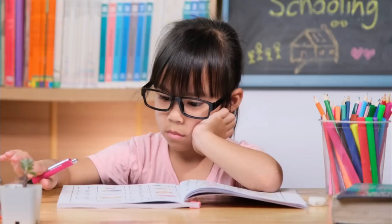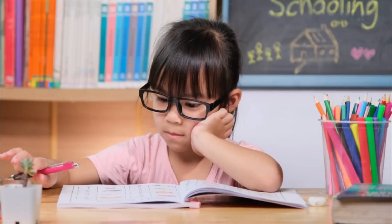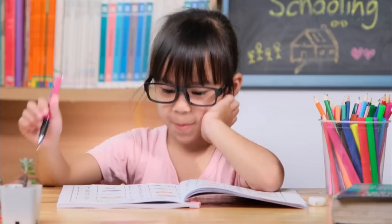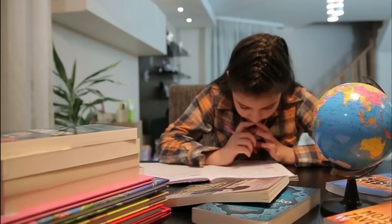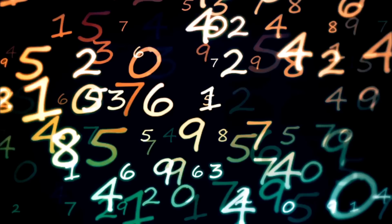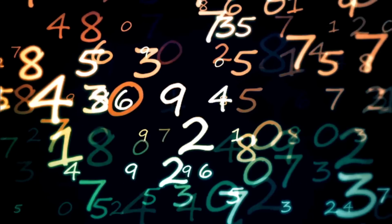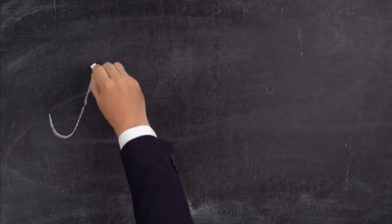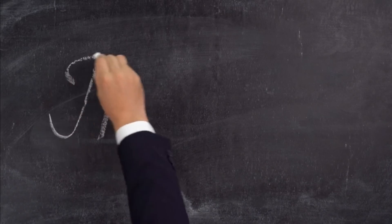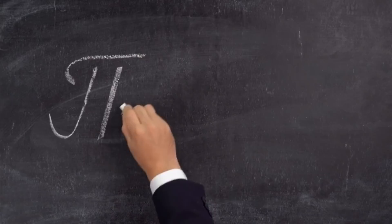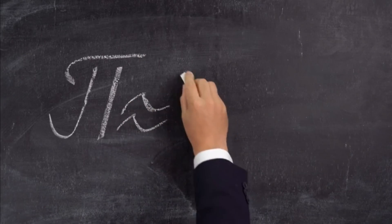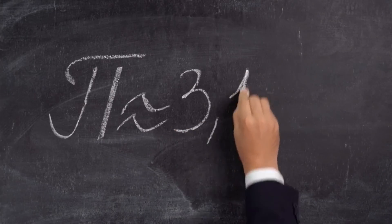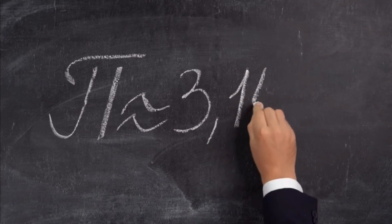What is the first thought that comes to your mind when you think of the word Irrational? When I think of the word Irrational, I think about a lack of adherence to a general pattern. For example, Pi, which can be rounded to 3.14 to 2 decimal places, does not follow a general pattern.